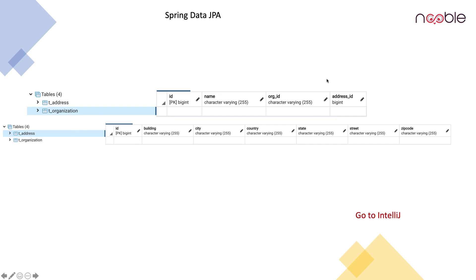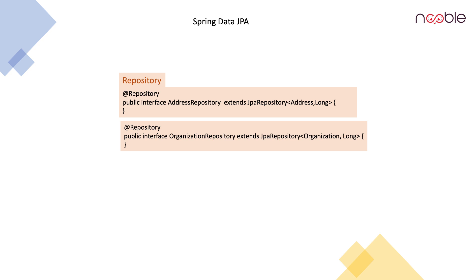You can see the address ID in the organization table, and there is no reference to the organization table in the address table. Now let us create the repositories. We have the public interface AddressRepository which extends JpaRepository of Address and Long, and similarly the OrganizationRepository which extends JpaRepository of Organization and Long.